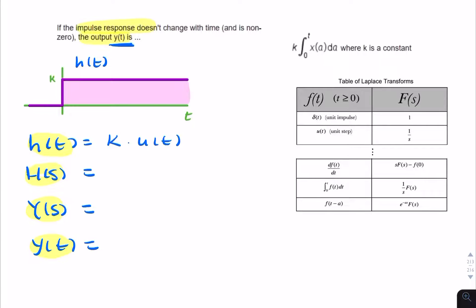So H of S is the Laplace transform of a unit step. And here we have an extract from the table of Laplace transforms. A unit step is 1 over S. So we have K times 1 over S.